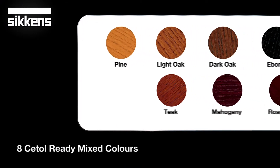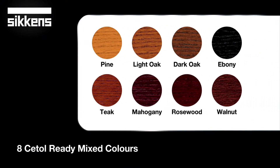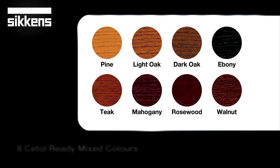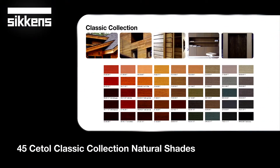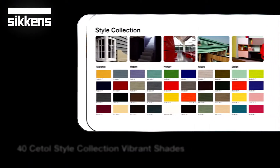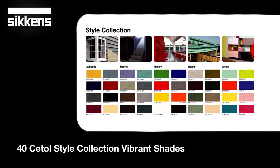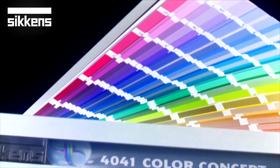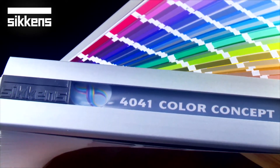All Setol and Ruble products come in a wide range of colours to help create different design effects. Setol HLS Plus and Filter 7 Plus are available in 8 ready-mixed colours, with more shades available in the Setol Classic Collection and Style Collection. The Ruble range of opaque finishes is available in the extensive 4041 colour palette, offering 1624 different shades.